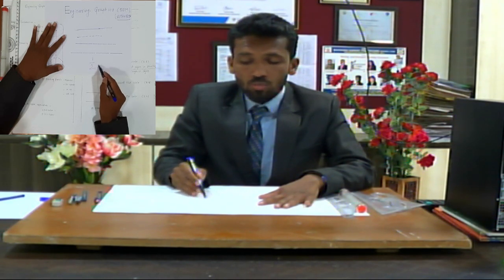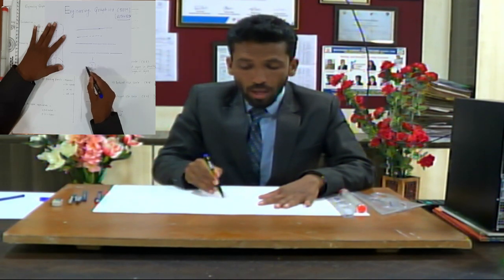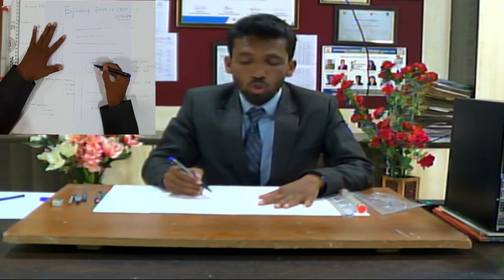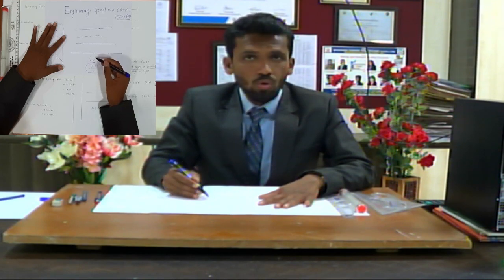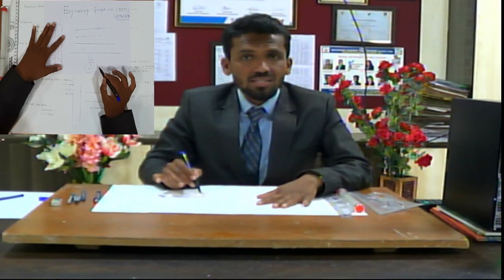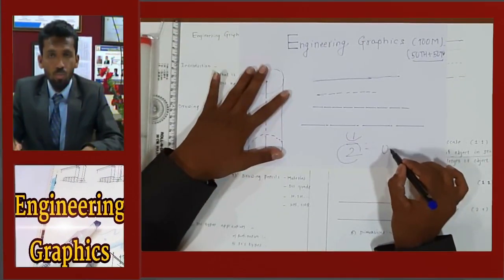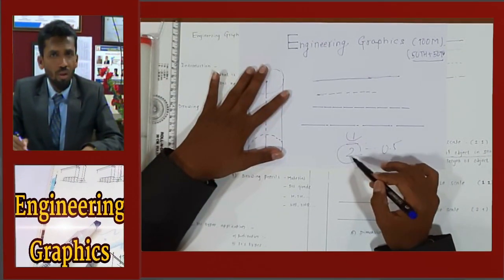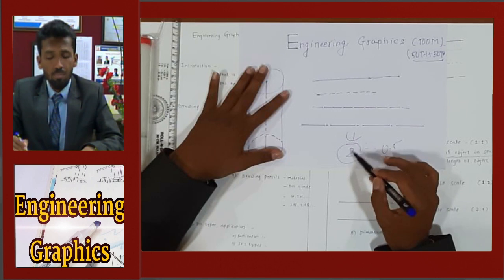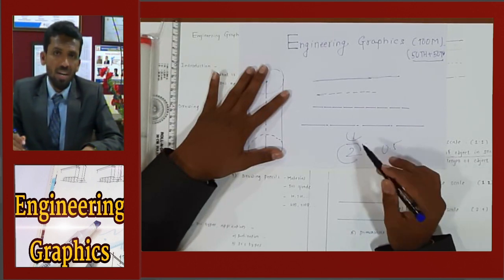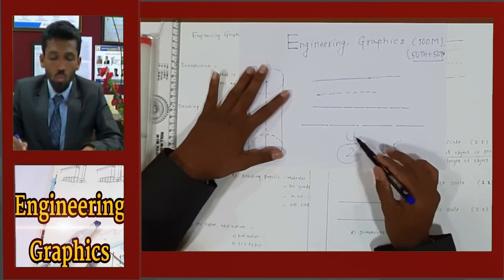So the actual dimension is larger and the drawing is smaller. The reduction scale is 1 by 2, which equals 0.5. Similarly, 1 by 5 or 1 by 10 or 1 by 100 can be used — all are reduction scales where the drawing dimension is less than the actual dimension.